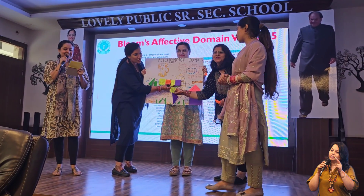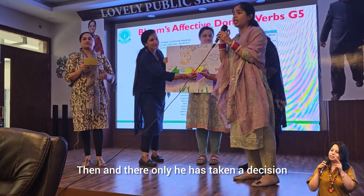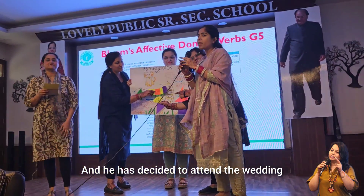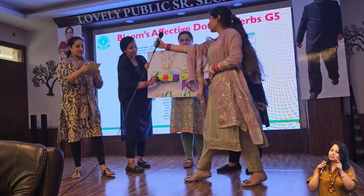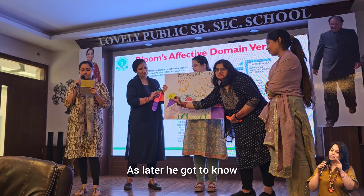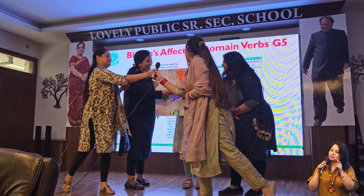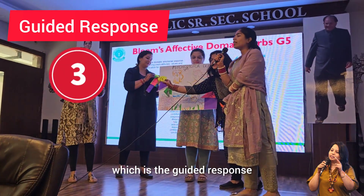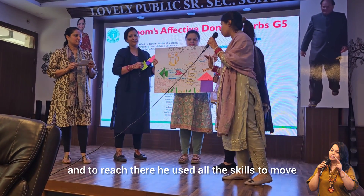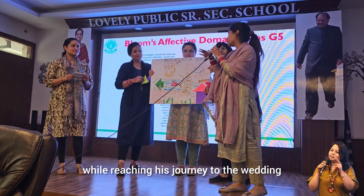Then the second skill set — the 'set' step — came. Right then and there, the dog took a position which includes the decision-making part. He decided to attend the wedding because he was so hungry from the past few days. He booked the ticket and started his journey, but could not complete it, as he got to know that the bridge was broken. So the third step — guided response — came. He tried various modes of transport and used all his skills to move, trying and making various errors while reaching the wedding.